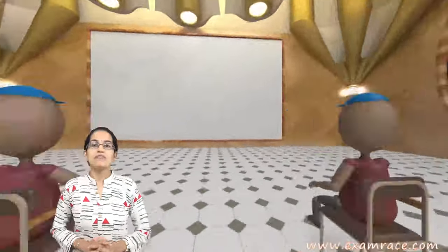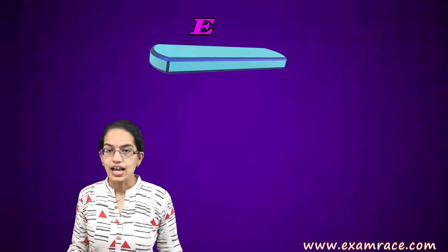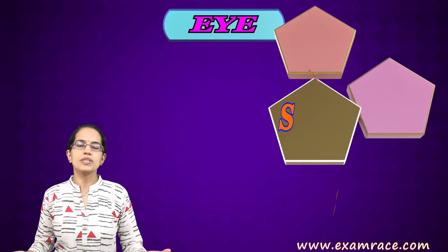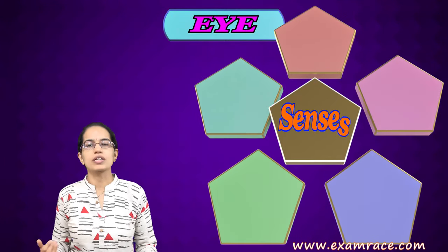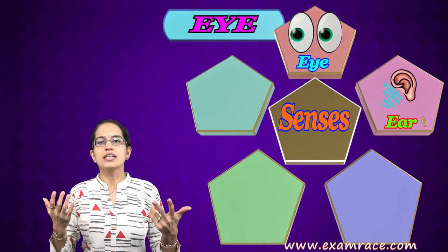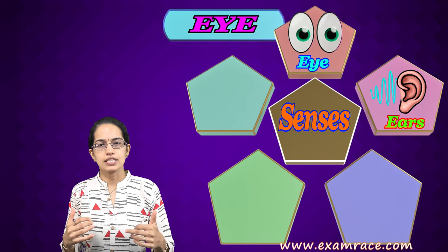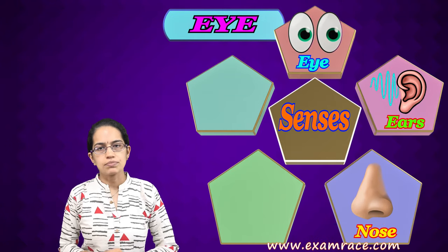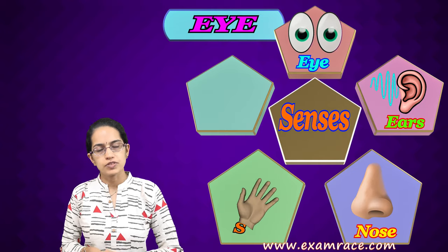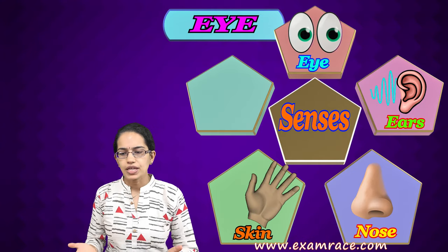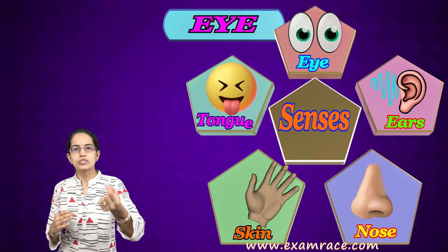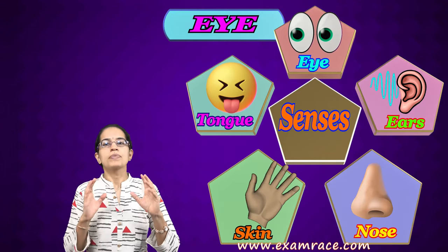Today we would be beginning with a very interesting topic, the eye, one of the major sense organs. We already know there are five sense organs: we have the eye, ears, the sense of smell through the nose, the touch receptors present in the skin, and then we have the tongue which senses taste.